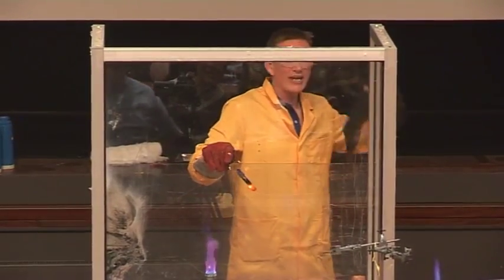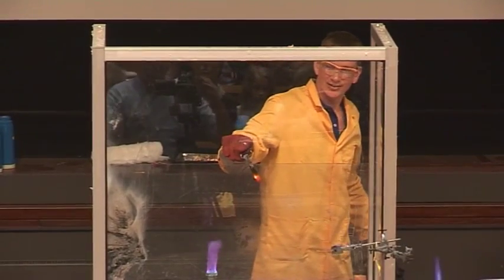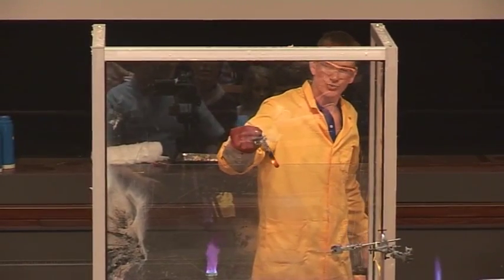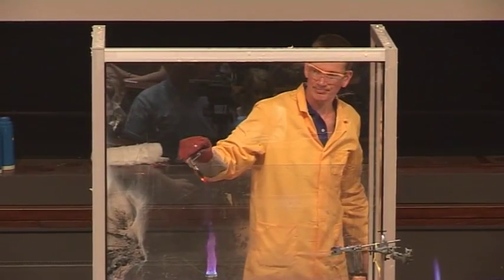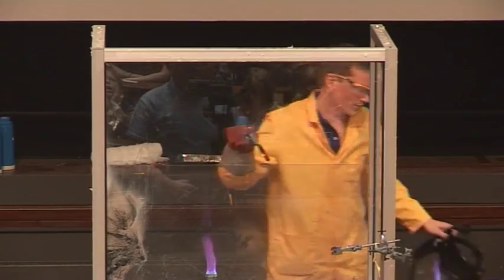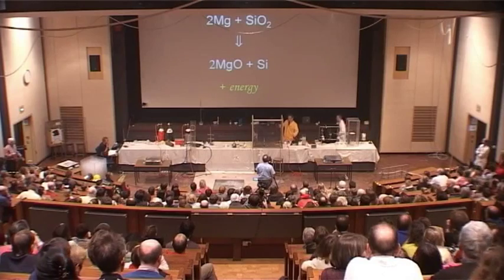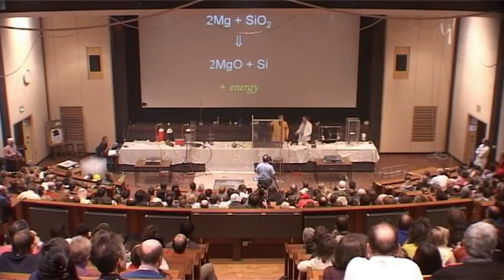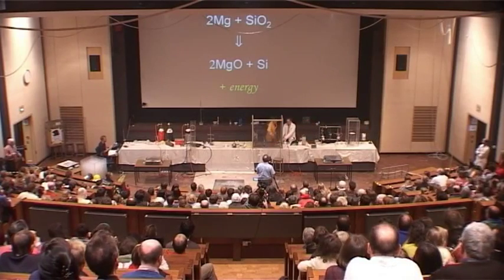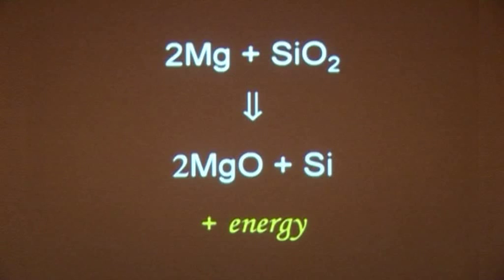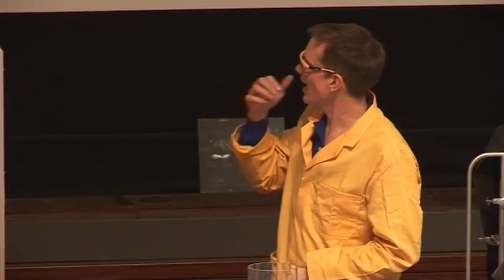Even sand reacts with burning magnesium. Now, what do we get when this reacts? Magnesium and sand — the magnesium steals the oxygen from the sand, or the silicon dioxide, and initially forms silicon and magnesium oxide.